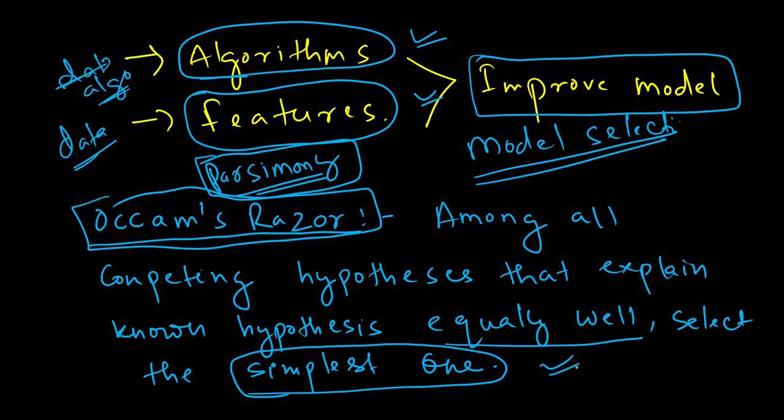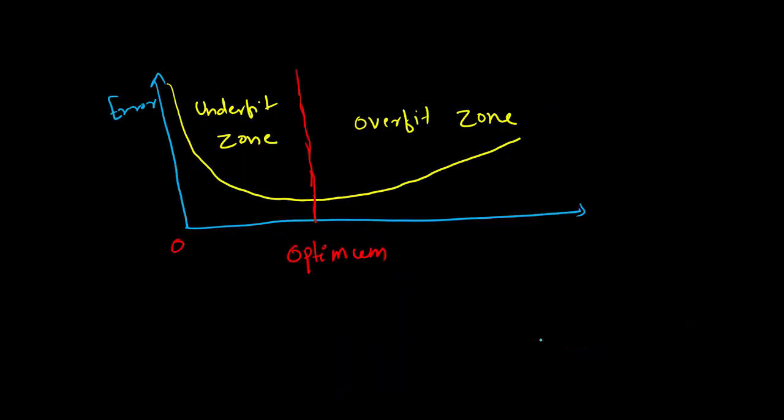That's one thing one should keep in mind while building machine learning models. Just to understand by visualizing how the underfitting and overfitting thing work with respect to the number of features and algorithms. So, on one side we have the error rate, training error, and the gap between the training and test error. And on the other side, we have the algorithms and the features.